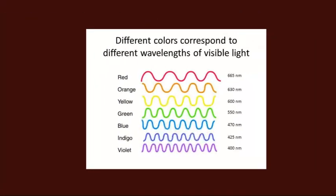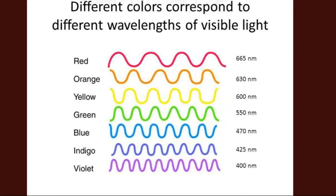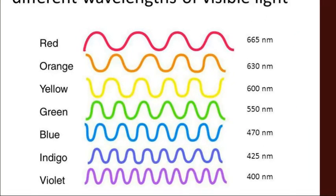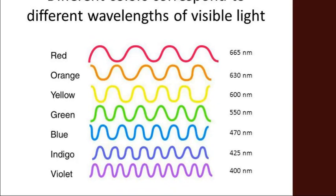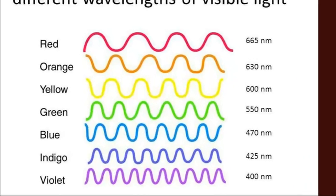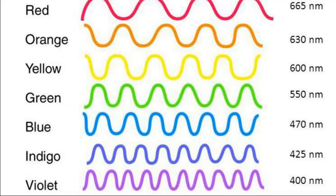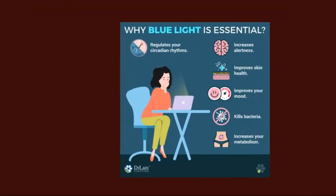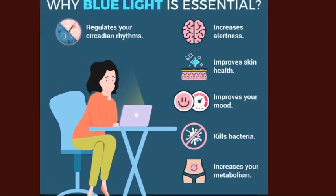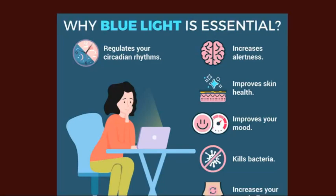Blue light in particular is the wavelength of light with the strongest inhibitory impact on melatonin secretion. Blue light is around about 470 nanometers in wavelength and essentially stops melatonin from being secreted. But that doesn't mean blue light is bad — it is actually essential for our health. It regulates our circadian rhythms, and we need it to stop melatonin being secreted in the daytime so that we can be alert and get on with life.